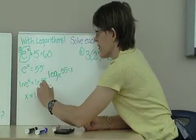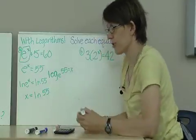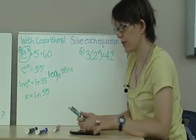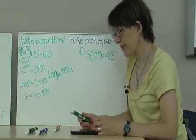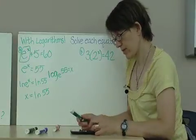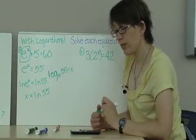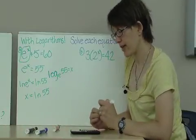Natural log of 55 is an irrational number. So I'm going to determine that value using my calculator. And I get 4.007.